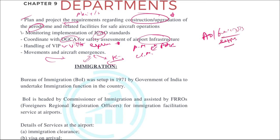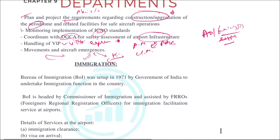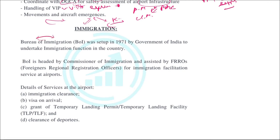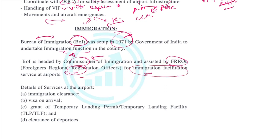Next is the immigration department. In India, there is a separate department known as the Bureau of Immigration, BOI, set up in 1971 by the Government of India to undertake immigration functions. BOI is headed by a Commissioner of Immigration and assisted by local foreign regional offices. At the airport, they carry out immigration clearance, visa on arrival, grant of temporary landing permits, and clearance of deportees.